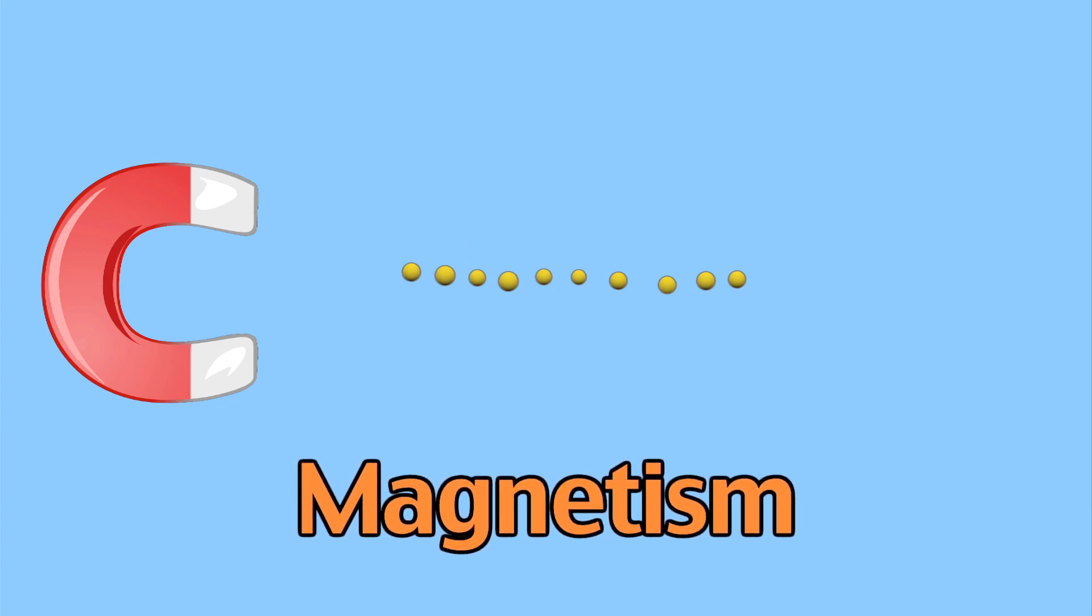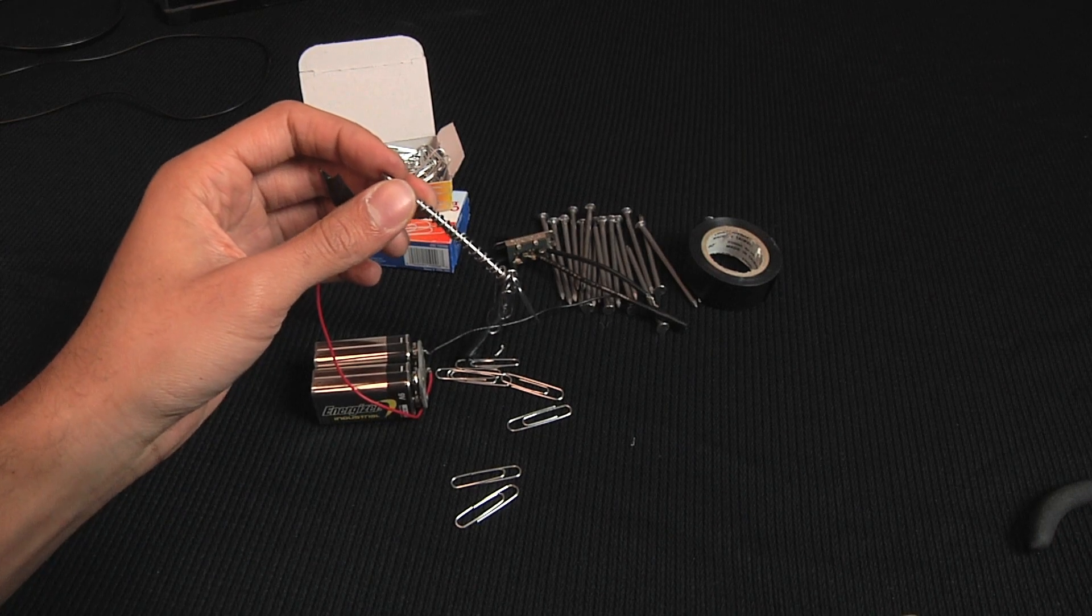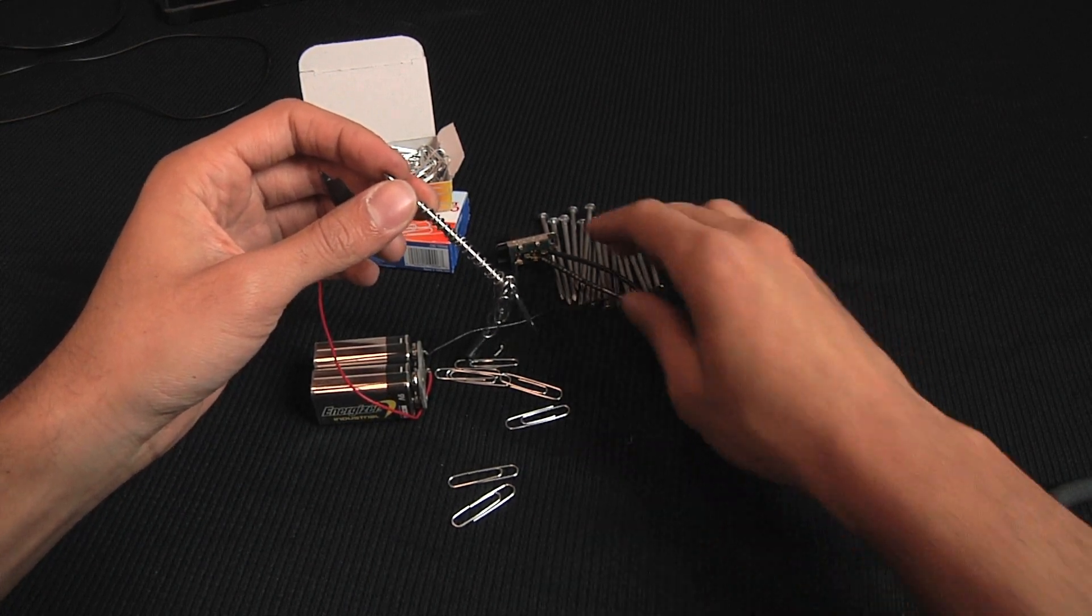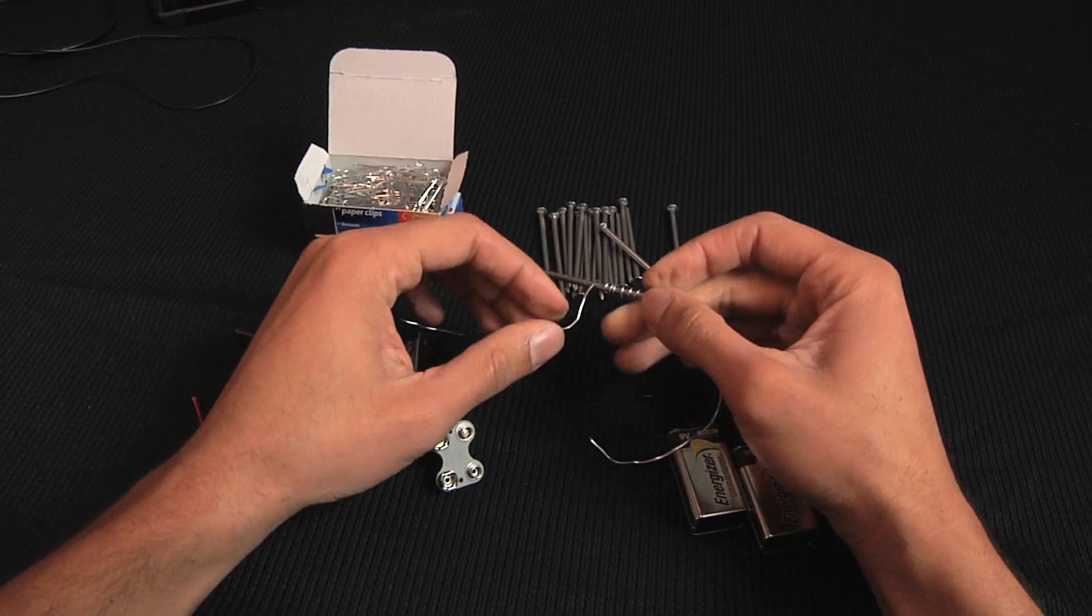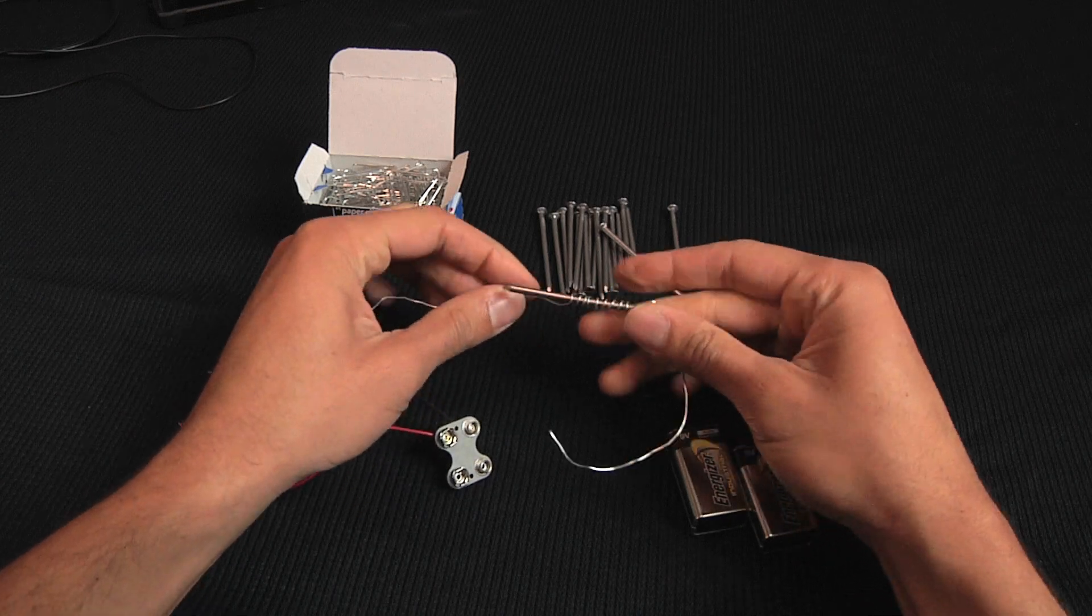In your lab, you created an electromagnet, which is an instrument used to create a magnetic field. You connected conducting wire to a battery and wrapped that wire around a nail.